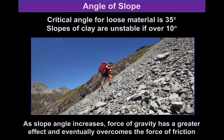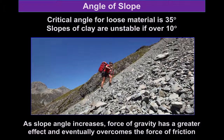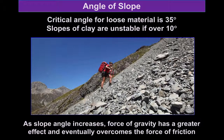The angle of the slope plays a role as well, although it will depend on the nature of the material that makes up the slope. Most loose material, for example sand or gravel, if you just pour it into a pile, will come to rest at an angle of about 35 degrees. But other materials, for example clay, even a 10-degree slope in a clay slope may be unstable. The steeper the slope, the greater the influence of gravity on that slope becomes. Once the effect of gravity is greater than the friction that holds the slope in place, that's when we'll have a mass movement.